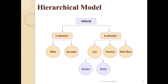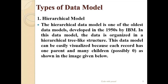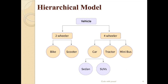Here is an example of the hierarchical model. We display our data like this: for vehicles, the vehicle is the parent. In the hierarchical model we have a parent and many children. The vehicle has two children: two-wheelers and four-wheelers. Under two-wheelers we have bike and scooter, and under four-wheelers we have car, tractor, and minibus. Under car we have sedan and SUVs.